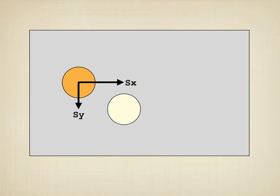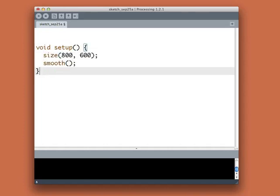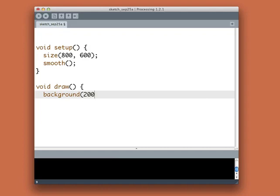So let's just get this much working. Here's a nice new empty sketch and we'll just get things started. I'll have a void setup and I'll say size 800 by 600 and I'll smooth things out. And then I want to have a draw. So I'll say void draw and we'll say background of 200.